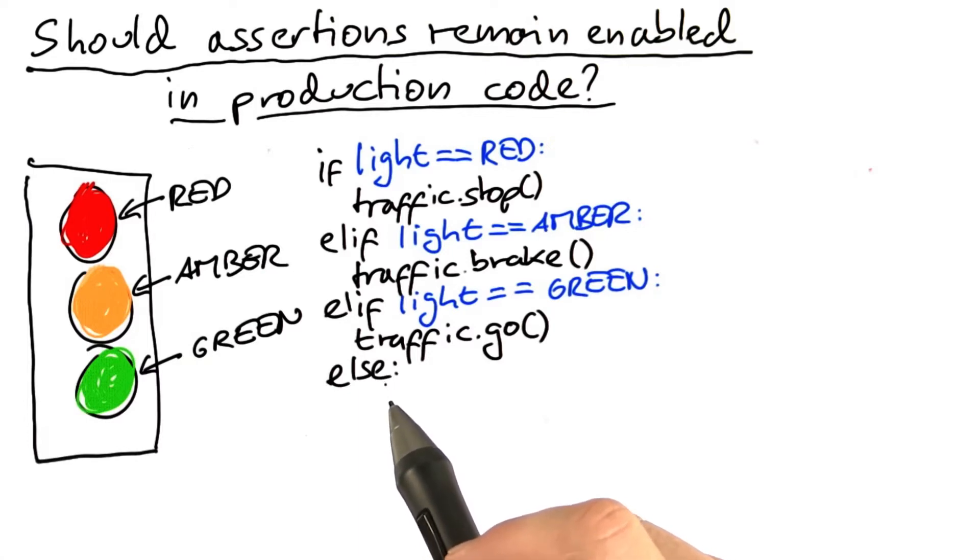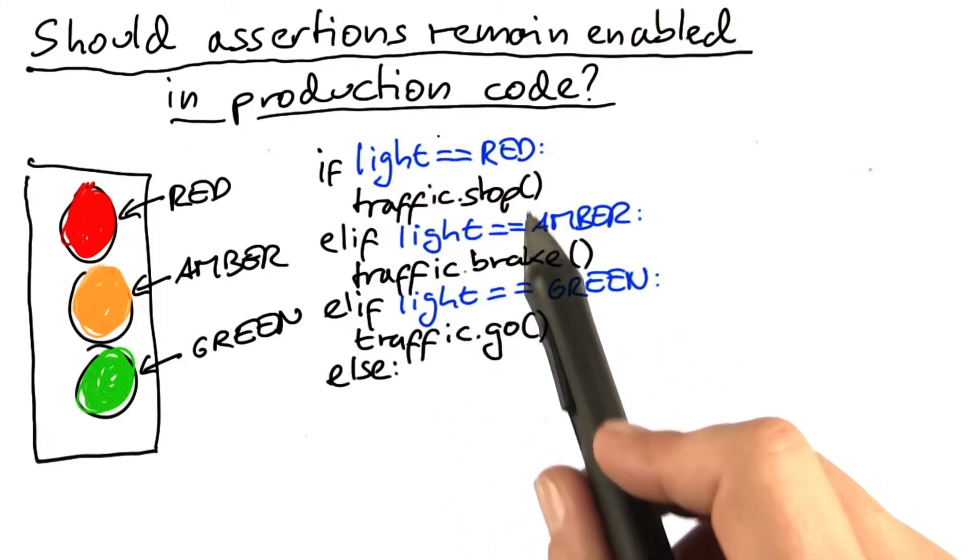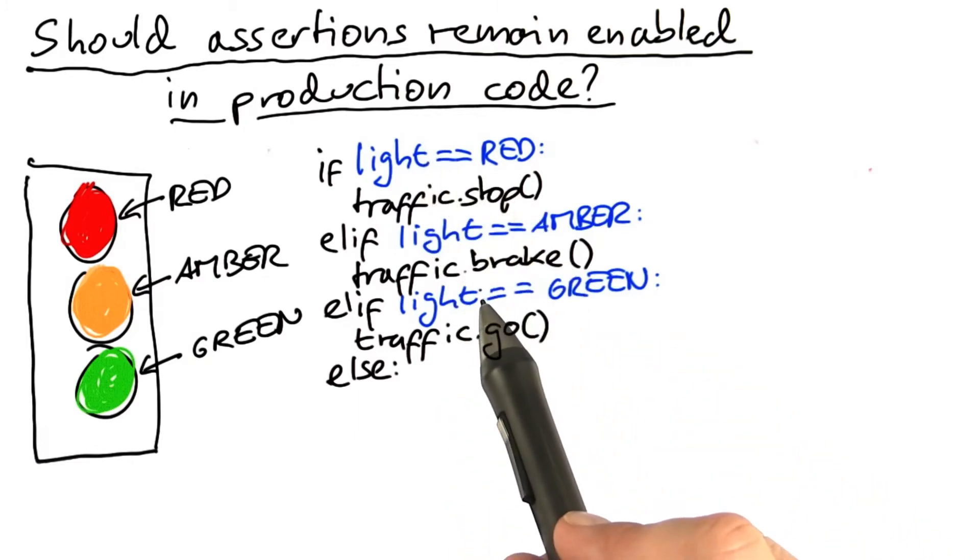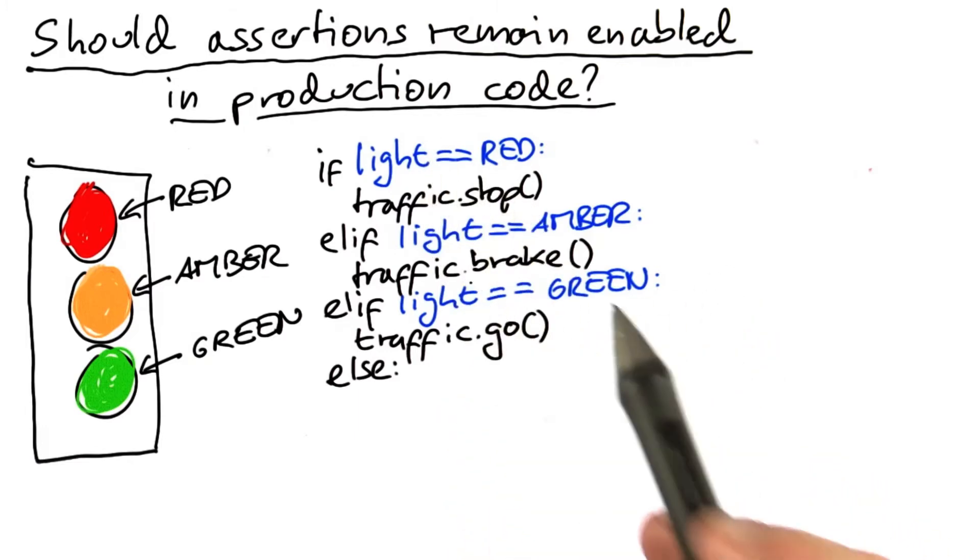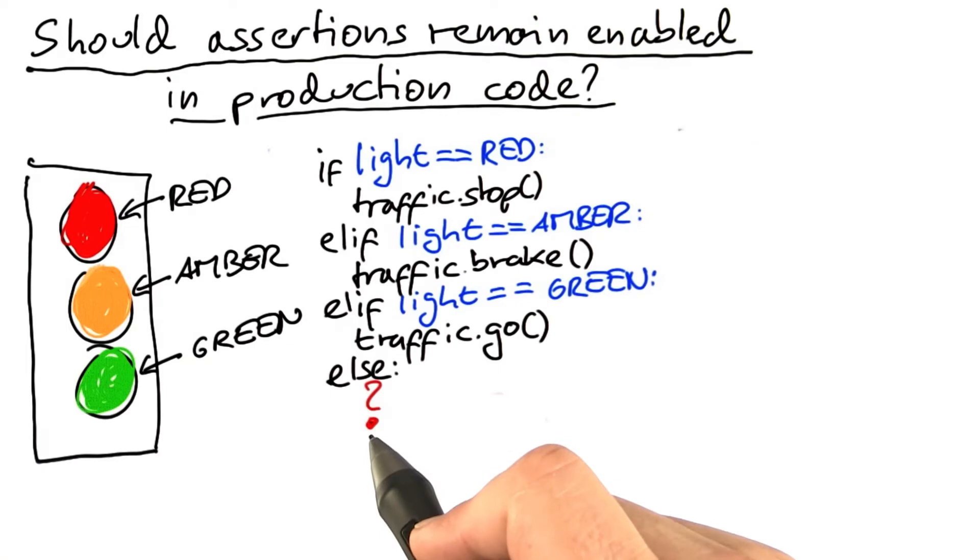Now being good programmers, we always assume that something goes wrong. If the light is neither red, nor amber, nor green, which in principle shouldn't happen, which due to some bug could happen, what should be here where the question mark is?